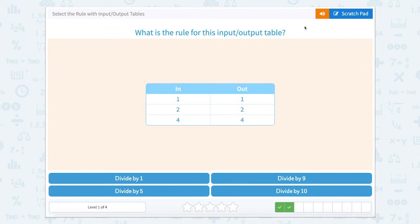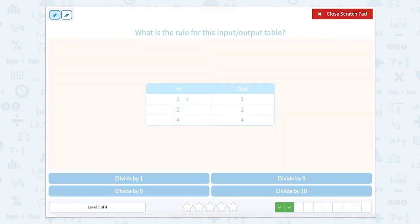What is the rule for this input-output table? So remember we're going from the input to our output. We need to find the pattern. What is the pattern between these? Well if I'm going from 1 to 1, 2 to 2, and 4 to 4, my numbers aren't changing.